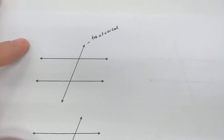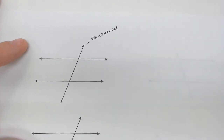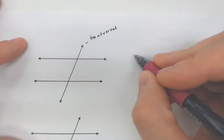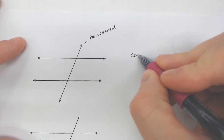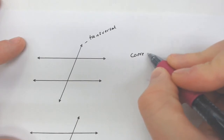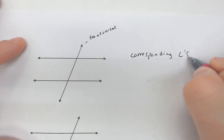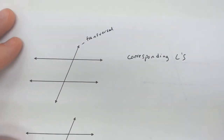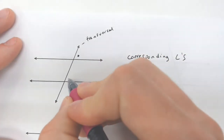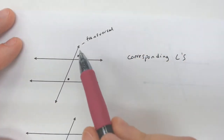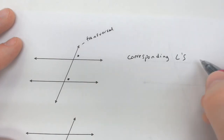Now based on the parallel line setup, there are a lot of things that actually occur and we're going to learn about those right now. The first of which is what I call corresponding angles. There are a lot of them on here, but these angles right here — these two that I just put dots on — are going to be considered congruent.